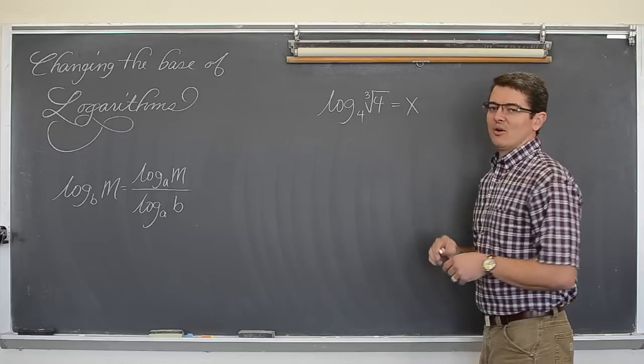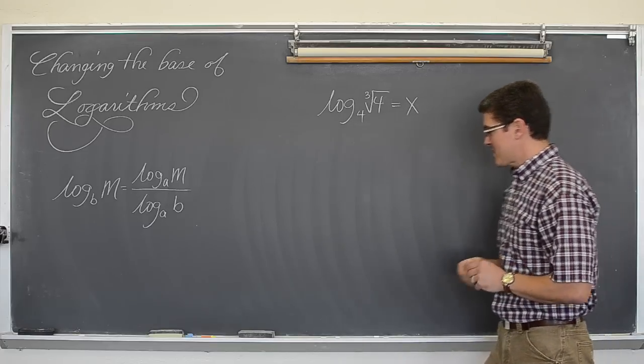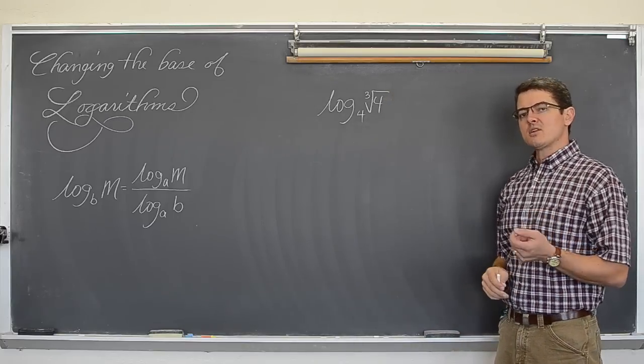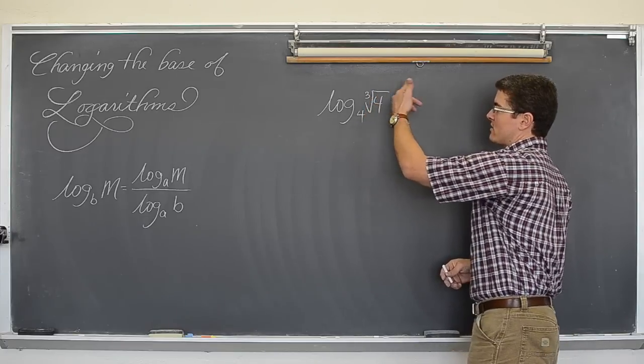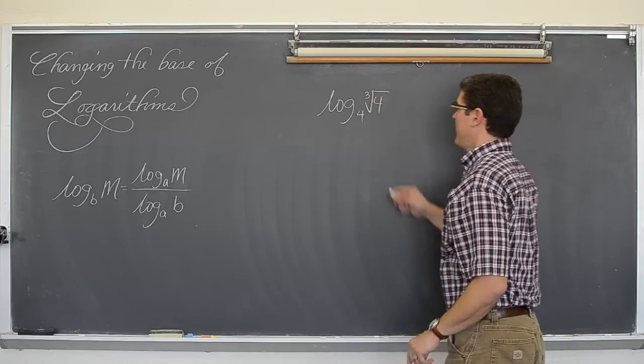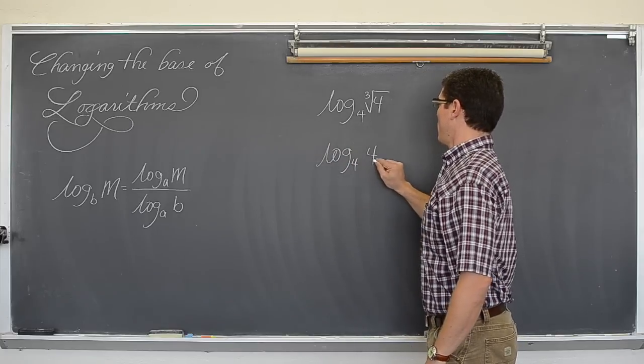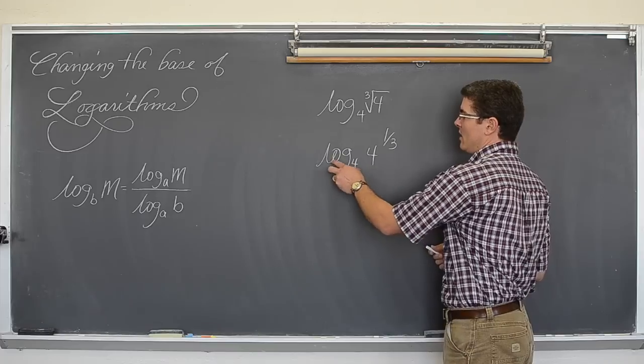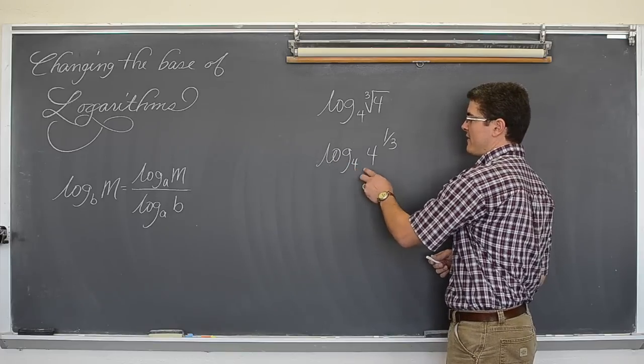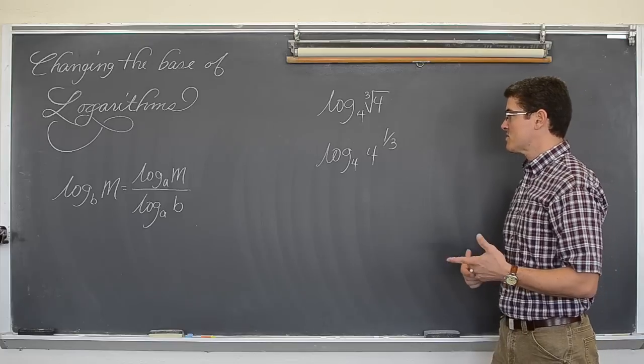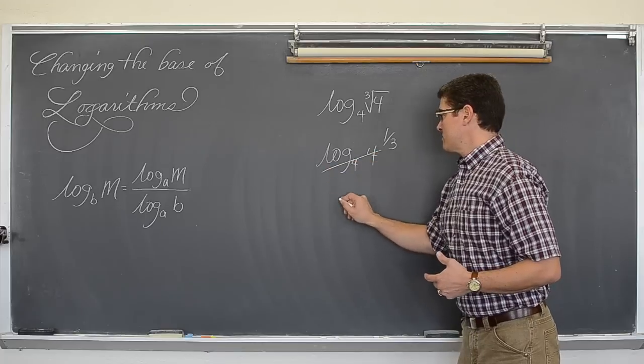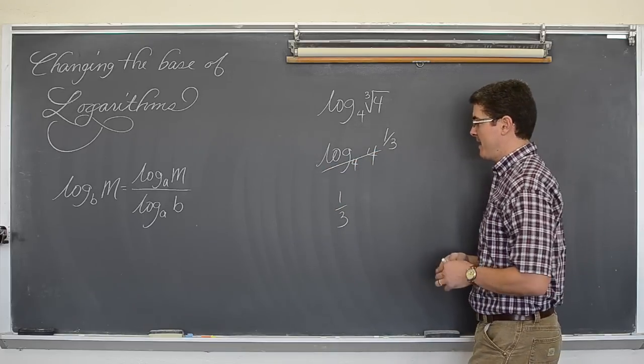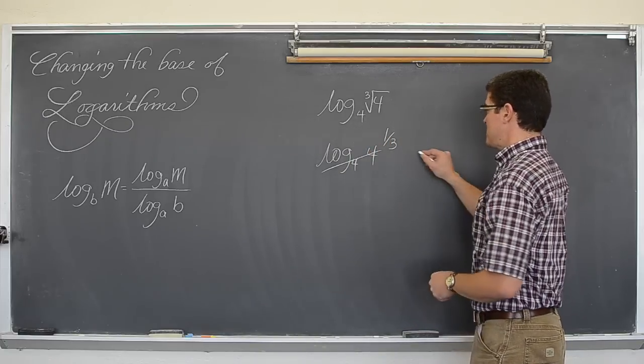Let's take this expression and write it without the radical, and write it as log base 4 of 4 to the 1 third. Now in my introduction to logarithms, I talked about how when you log with a base and you are logging a number with the same base, that those will cancel out. So this will cancel out to be 1 third because the base of the log and the base of what you are logging is the same.